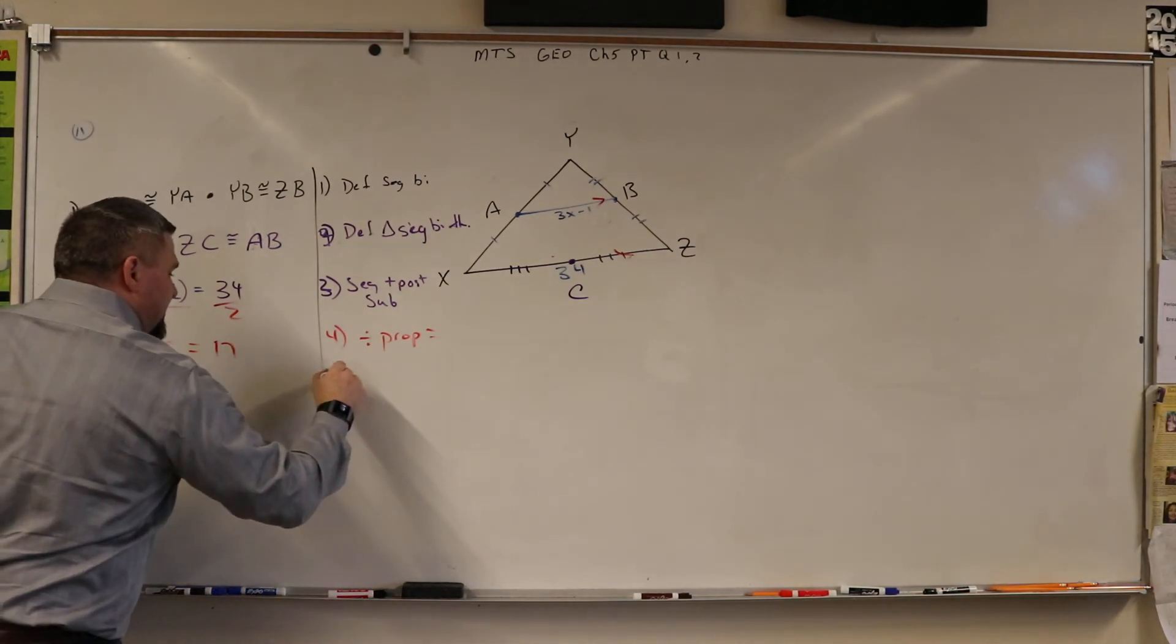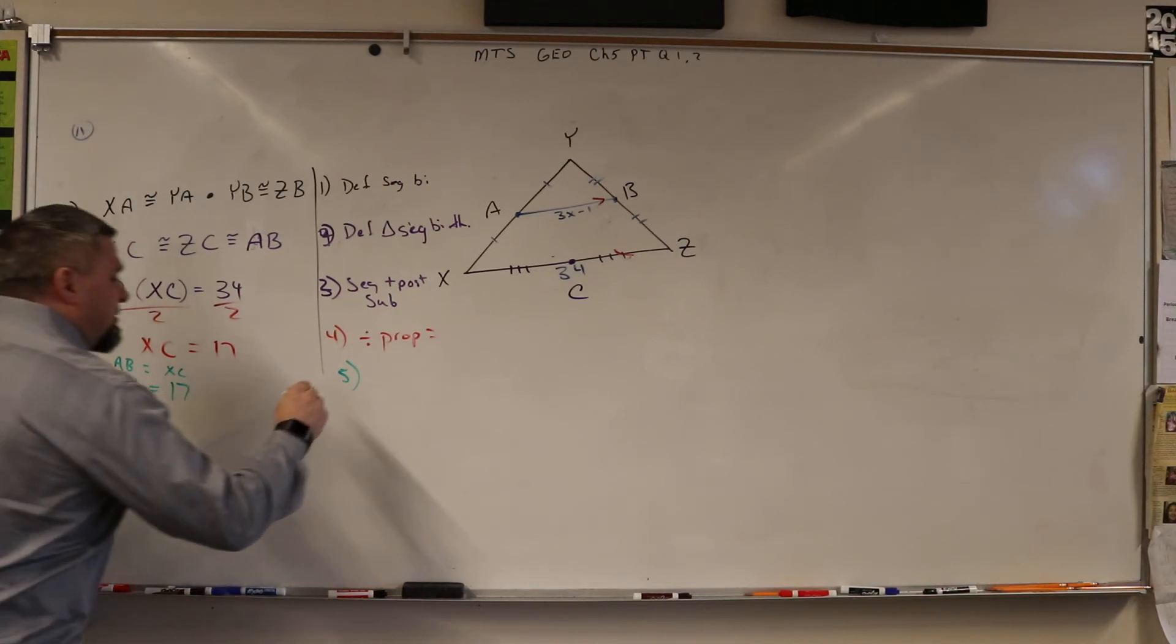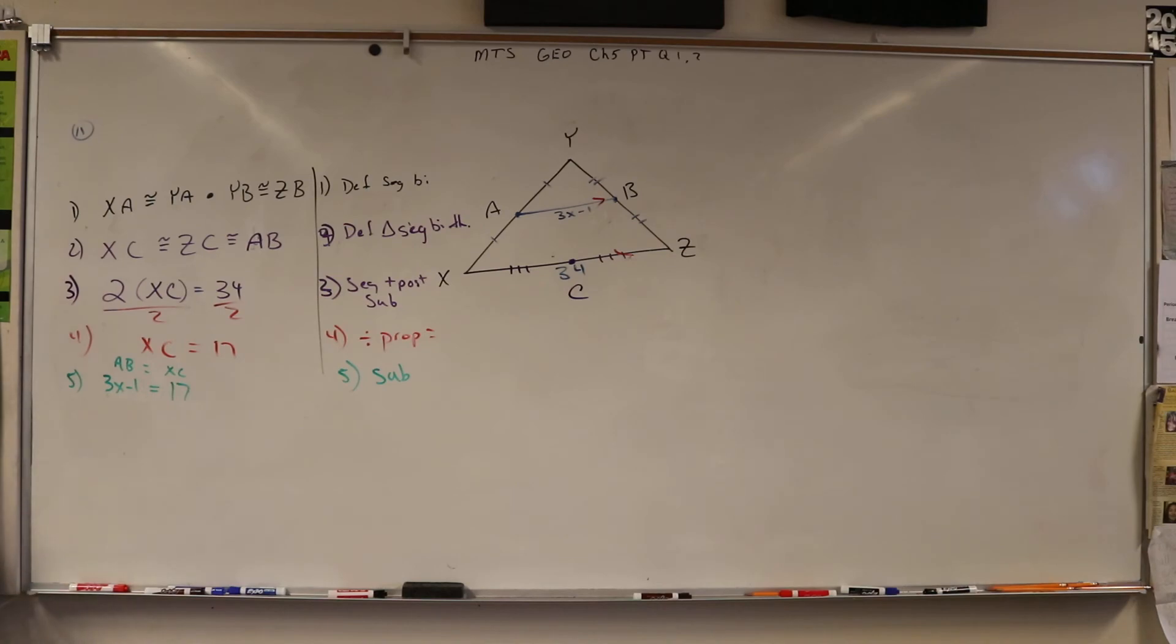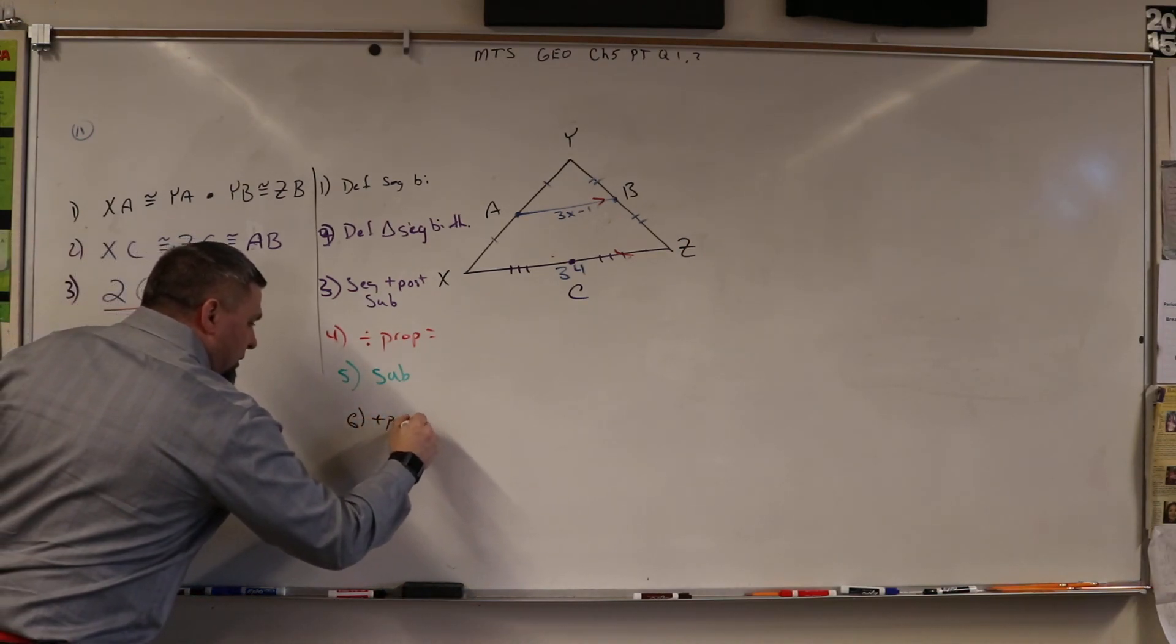And what do we call that when we plug things in? Substitution. Good job. And then what do we do when we're solving this? This becomes the easy part now. If we're going to solve it, what do I do? Remember a sad map? Always the opposite. And what's that called? Addition property of equality. Yeah, so 3x equals 18, and that's addition property of equality.